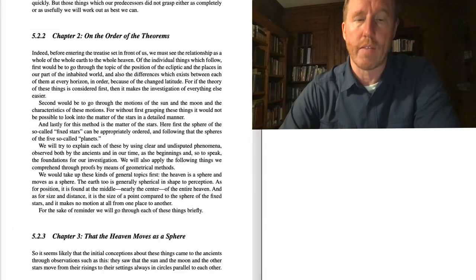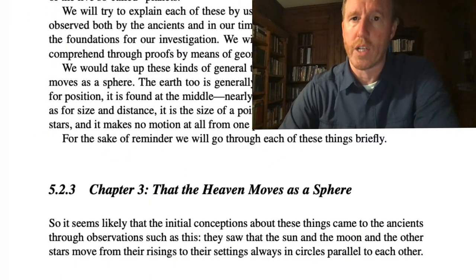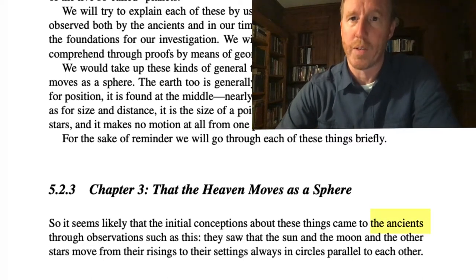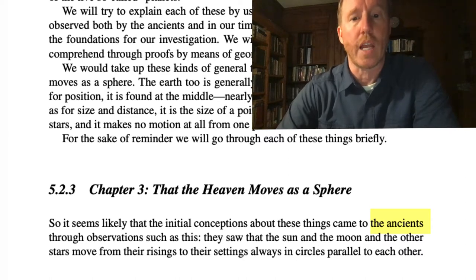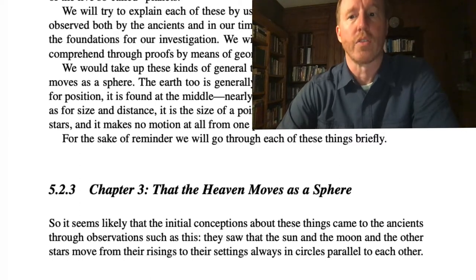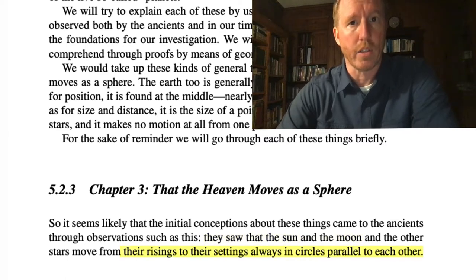So the title of this chapter is, That the Heavens Move as a Sphere. What he's basically telling us is that he's in agreement with the work of Aristotle, that the heavens themselves are in the shape of the sphere. He says that the ancients believed this. It's funny to hear about Ptolemy referring to the ancients. After all, we sometimes think of Ptolemy as an ancient. But he mentions that the ancients believed that the heavens themselves are in the shape of a sphere. Why did they believe that? He said it was on account of their observations. They watched the daily rising and setting of the sun, the moon, and the stars. And he noticed that the trajectories through the sky followed circles that are parallel to one another.